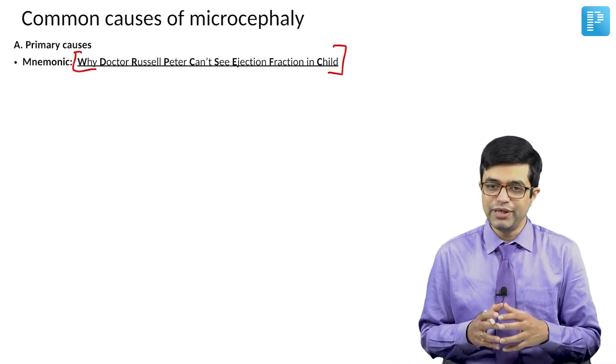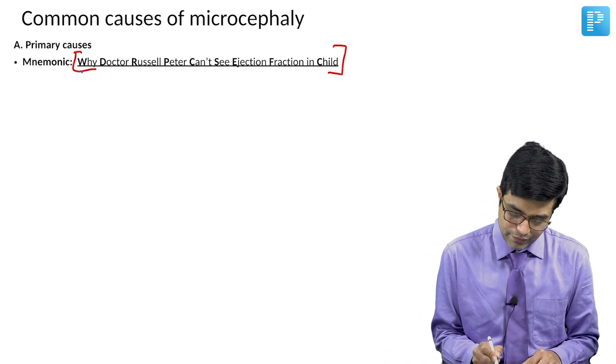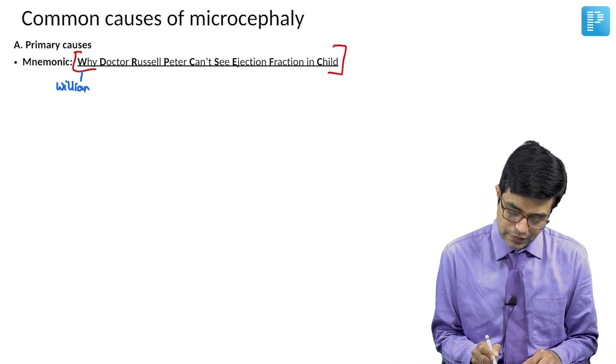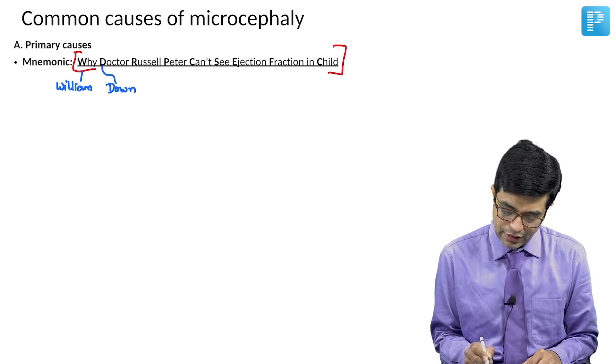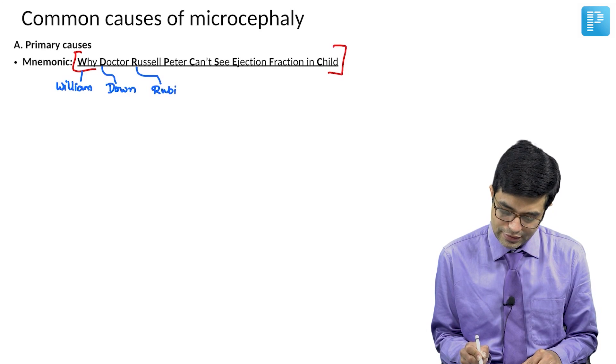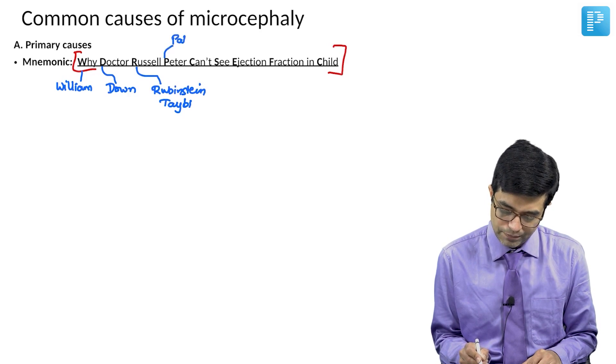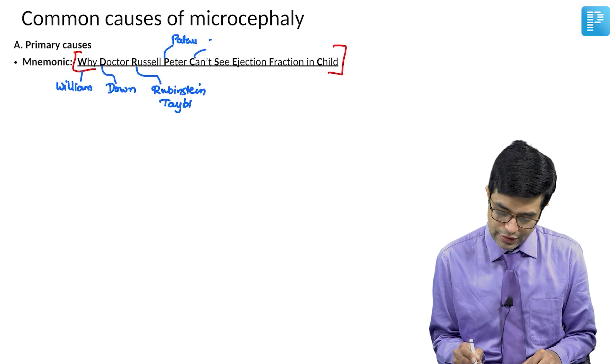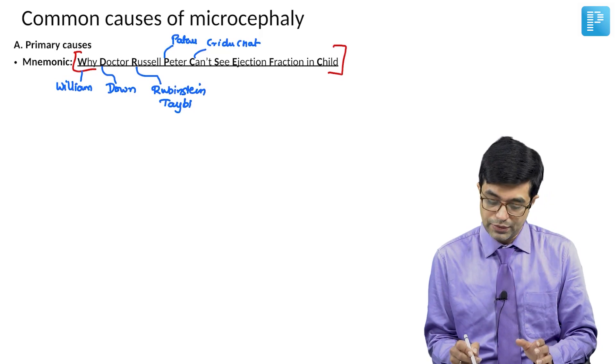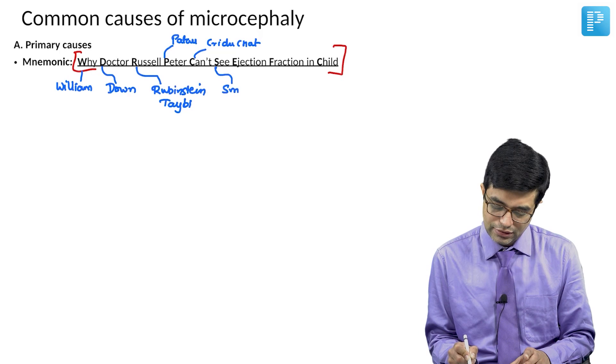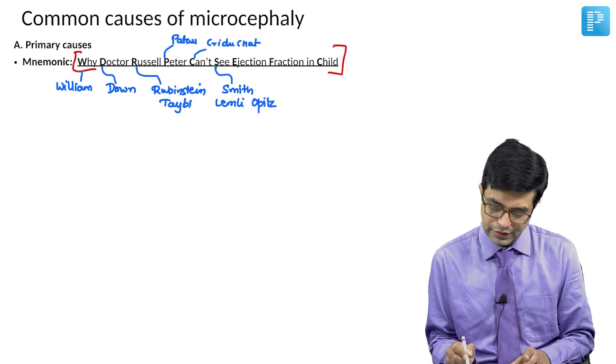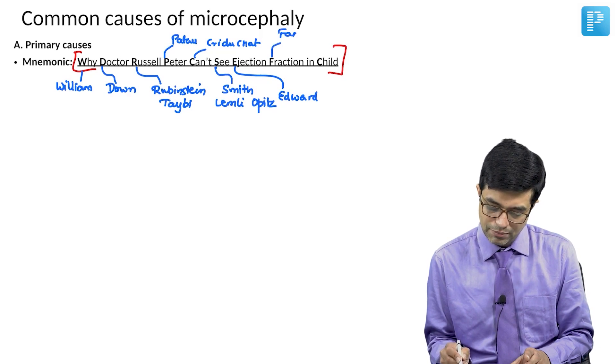What do these keywords mean? W stands for Williams syndrome, D stands for Down syndrome, R stands for Rubinstein-Taybi syndrome, P stands for Patau syndrome, C stands for Cri du chat syndrome, which is also known as chromosome 5 deletion syndrome. Then S stands for Smith-Lemli-Opitz syndrome, E stands for Edward syndrome.